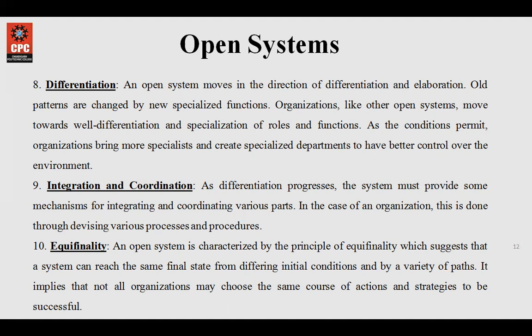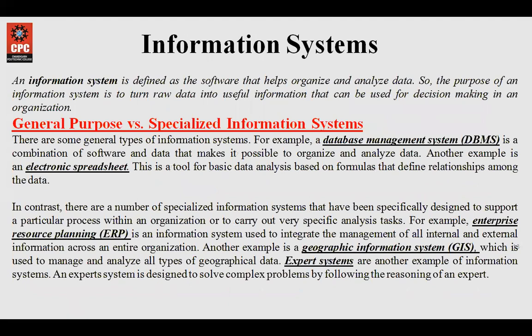Then comes information systems. What is basically an information system? It is software that helps to organize and analyze data. Organizing means keeping data in a format that can be used easily, and analyzing means studying it to produce better results. The purpose of an information system is to convert raw data into useful information that can be used for decision making.